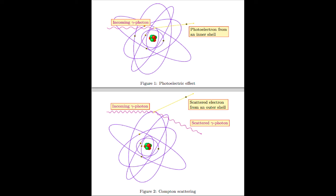Coherent scatter doesn't involve an ionization event; you really have a small excitation of the atom. The orbitals go to a higher energy state and then come back to a lower energy state, and a photon of the same energy is ejected, but it's ejected in any direction. That's coherent scatter.